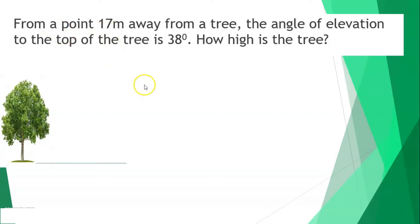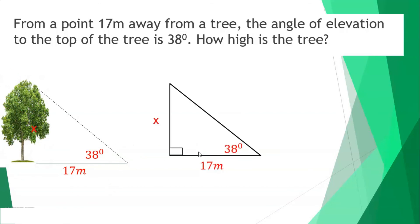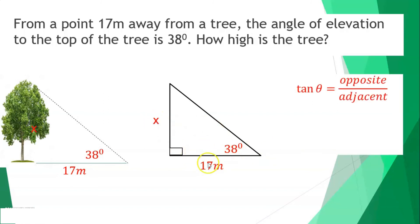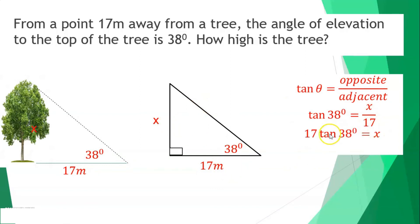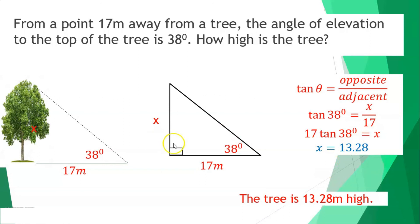From a point 17 meters away from a tree, the angle of elevation to the top is 38 degrees. How high is the tree? Using tangent: tan(38°) = x/17. Cross-multiplying gives x = 17 × tan(38°) ≈ 13.28. So the tree is 13.28 meters high.